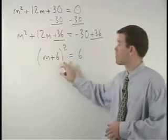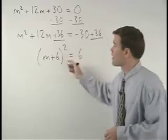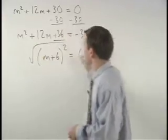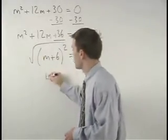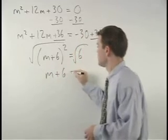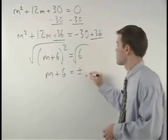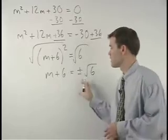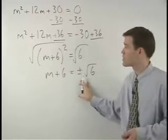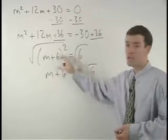To solve for m, we get rid of the squared by square rooting both sides, and we have m plus 6 equals plus or minus root 6. Don't forget to use plus or minus when square rooting both sides of an equation.